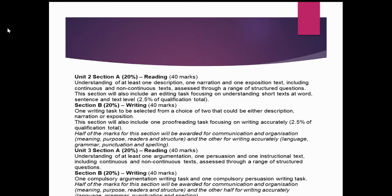We then move on to Unit 3, which is very similar in style — it has a reading and a writing section. However, in the writing section you have two tasks to complete; for example, it could be a letter, a report, or an article. Both writing tasks will be based on the themes you've read in the reading section. The reading section will cover a range of five texts, from continuous to non-continuous texts, and similar to Unit 2, they'll cover a range of reading skills.